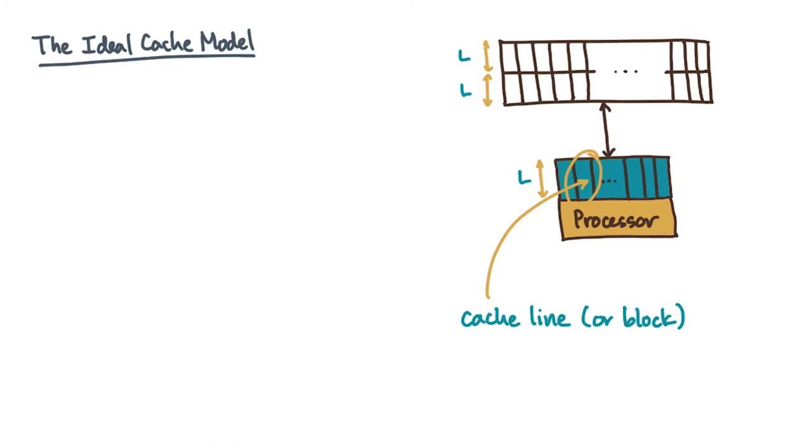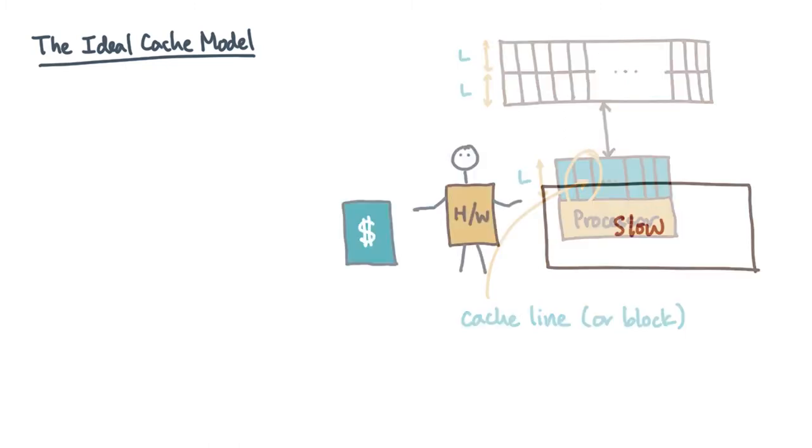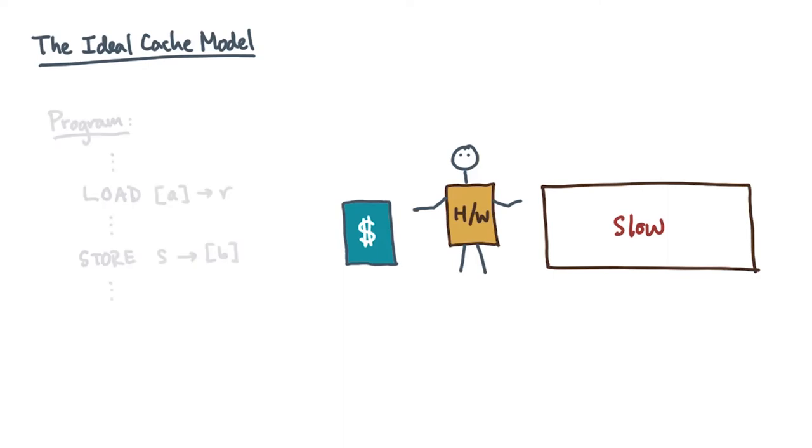So, you have a machine in which fast memory is being managed automatically. Consider your algorithm or program. As it runs, it issues sequences of load and store operations. These loads and stores reference addresses in slow memory. For this lesson, let's assume that the algorithm issues these operations sequentially.